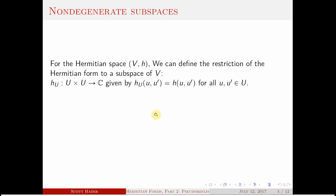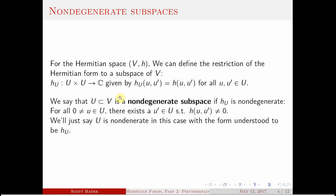We can also talk about subspaces being non-degenerate. We get another Hermitian space or Hermitian form if we just restrict the form to entries from a subspace. The restriction just takes the Hermitian form but only allows elements from the subspace. So now we can talk about a subspace being non-degenerate if that restriction is non-degenerate.